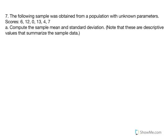Number seven: the following sample was obtained from a population with unknown parameters. The scores are: 6, 12, 0, 13, 4, and 7. We're asked to compute the sample mean and standard deviation, recognizing that these are descriptive statistics used to summarize the sample data — building blocks for conducting a t-test of significance.